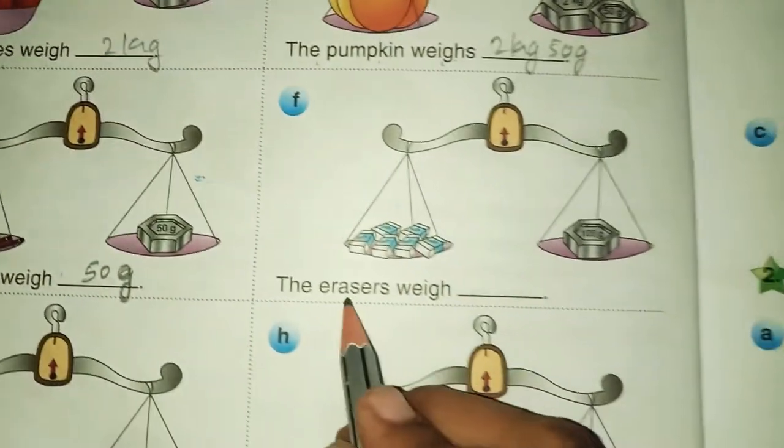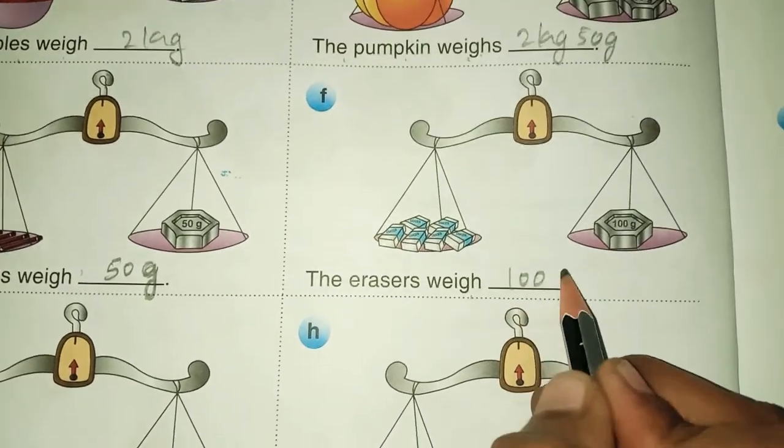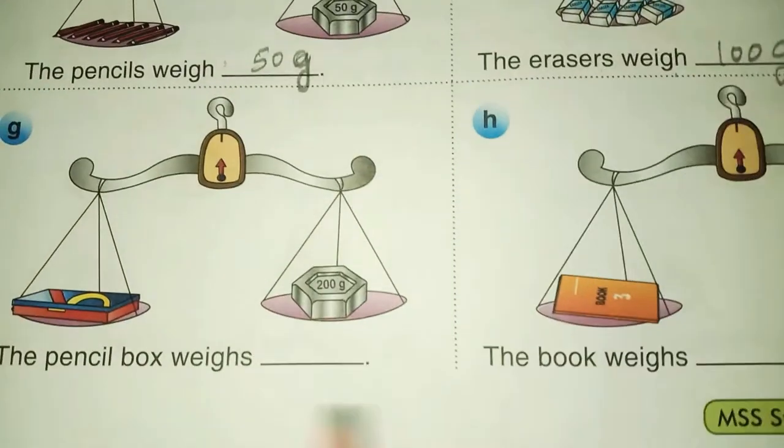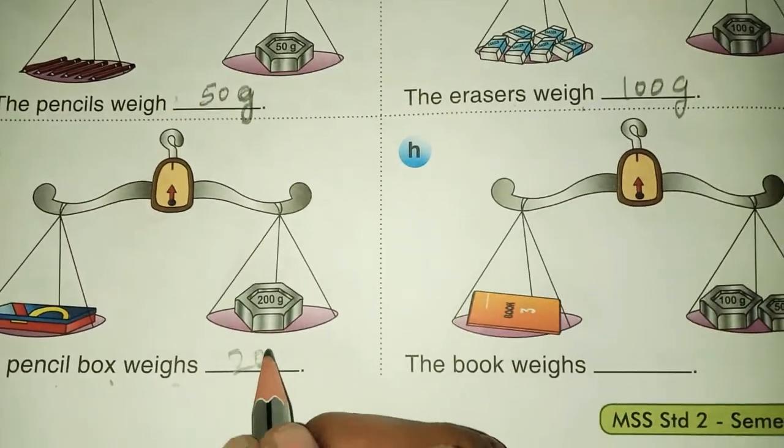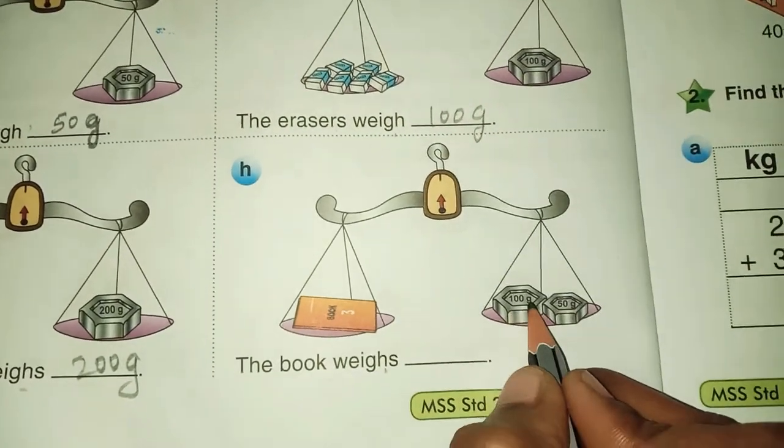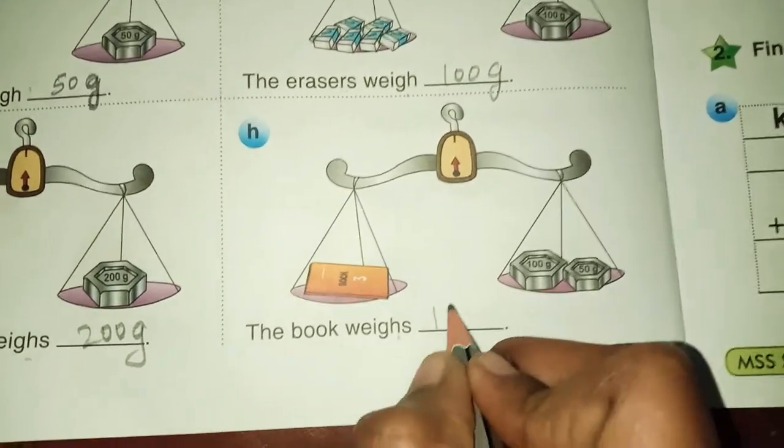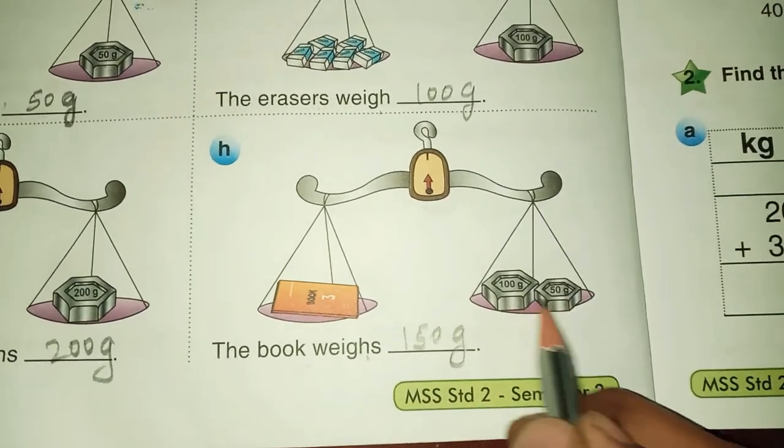The eraser weighs 100 gram. Next, the pencil box weighs 200 gram. The book weighs, see here, 100 gram plus 50 gram means 150 gram.